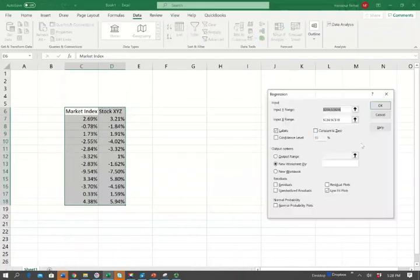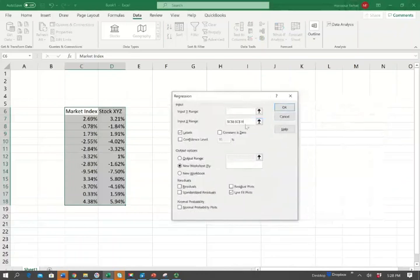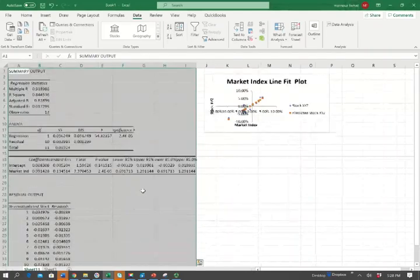So I'm going to click regression. Let me just make sure I have the Y-axis. So the Y-axis is the stock price, and I'm going to include stock XYZ. The X-axis is the independent variable, the market. So I have the label, and I'm going to do the line fit plot. I'm going to click okay, and I'm going to have this output.